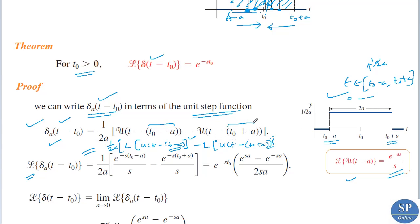Using the formula L{u(t − a)} = e^(−as)/s, we substitute the values. After applying the Laplace transform of each unit step function and factoring out e^(−st₀), we obtain e^(−st₀) times (e^(sa) − e^(−sa)) / (2sa).